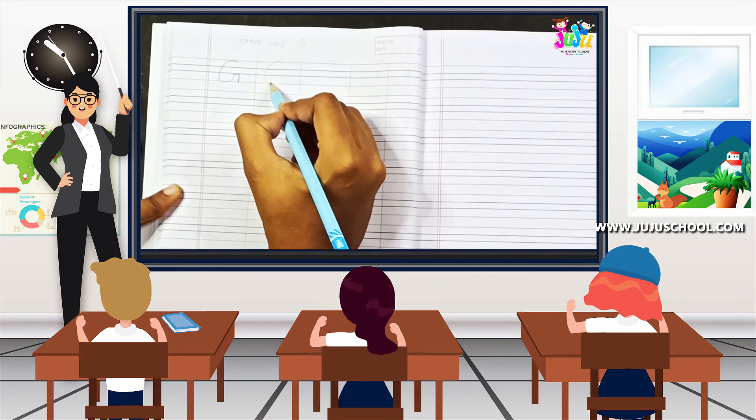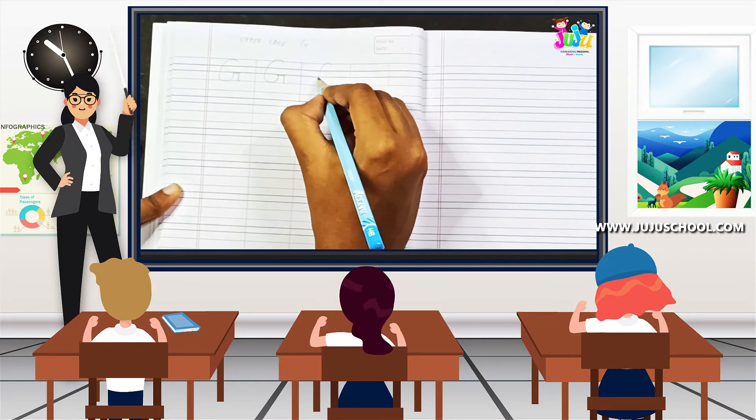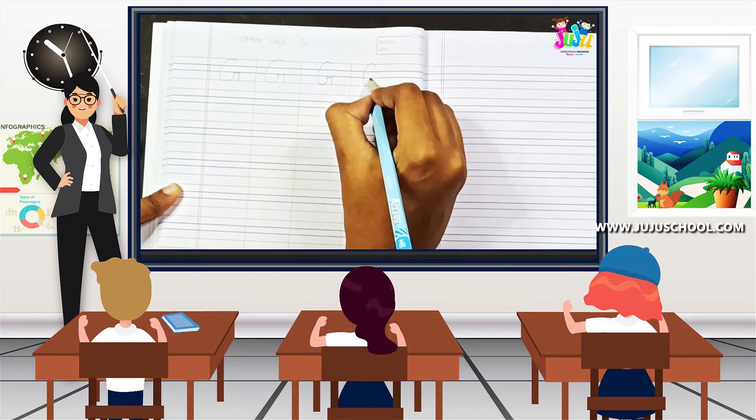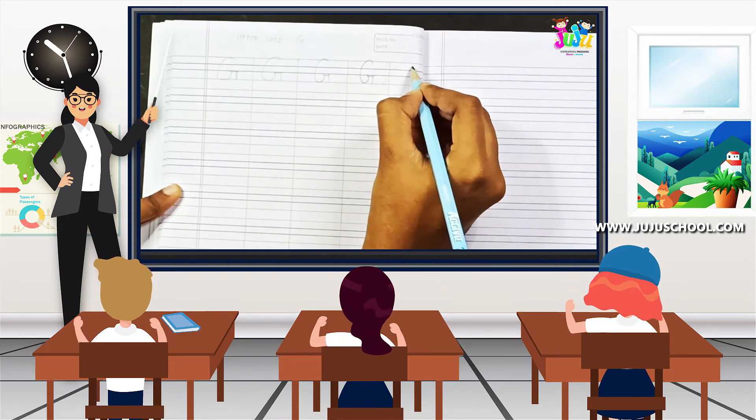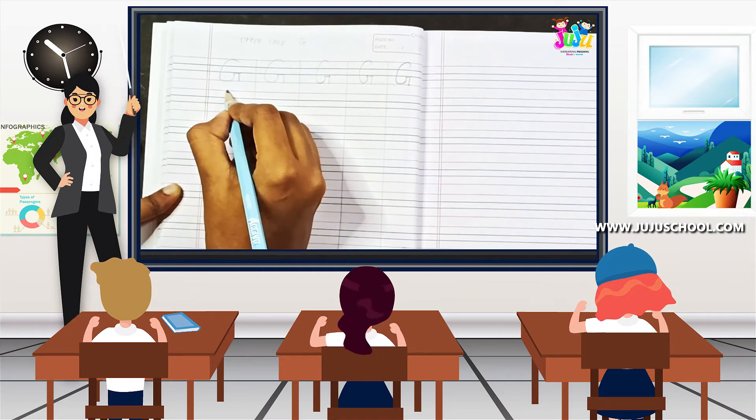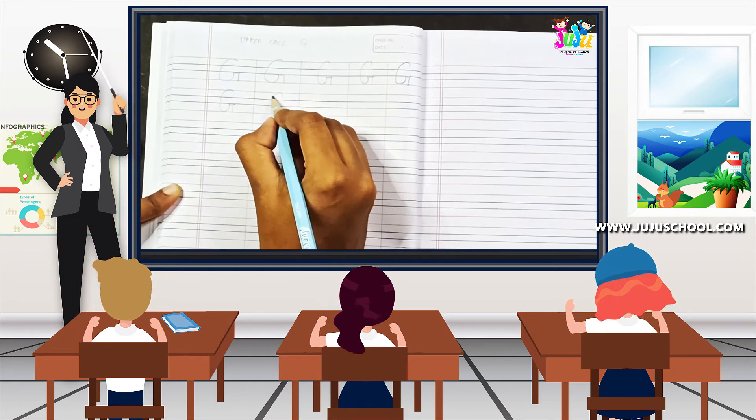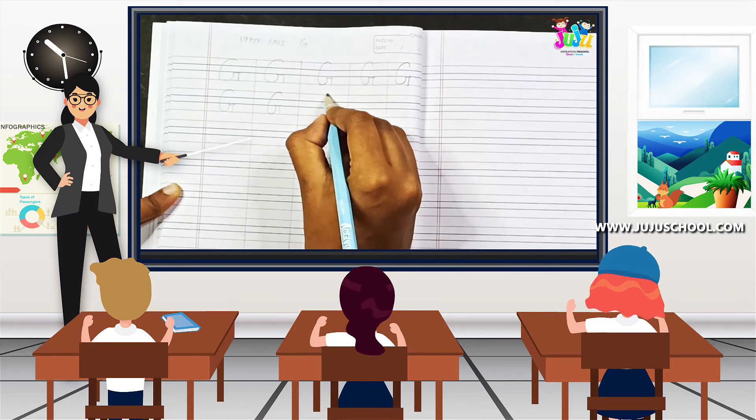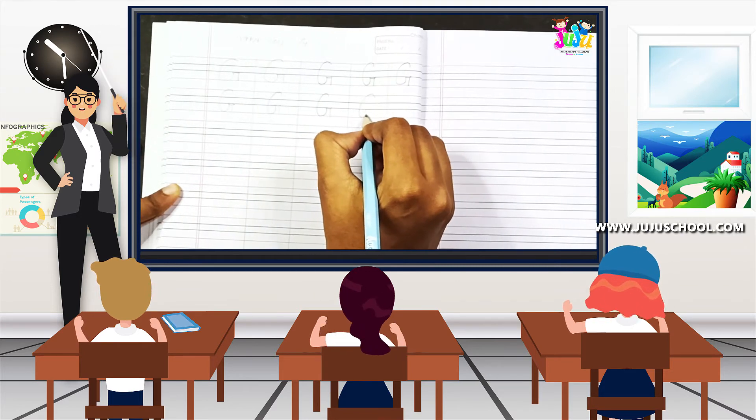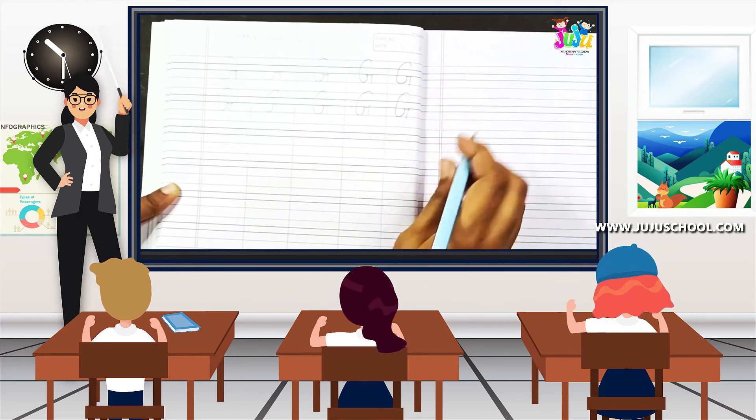Draw a right curve roundabout, a sleeping line, and a standing line. Again: right curve, sleeping line, standing line. Repeat this pattern across the lines. That's it, we are done.